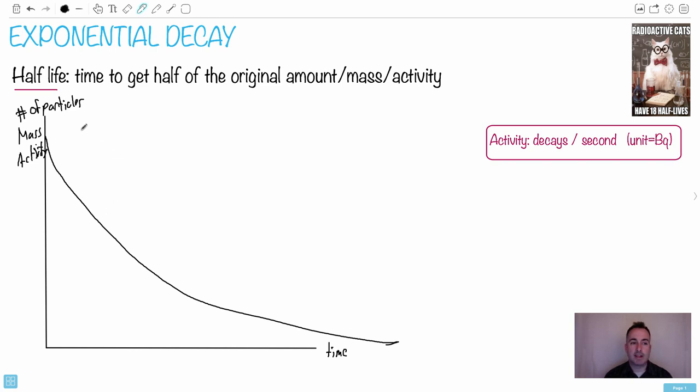So if you look at this, the idea is that you either start off with a certain number of particles or it could be a mass, like in grams or kilograms or whatever. It could be something called activity. Activity is just decays per second. So we use that unit called a becquerel. So it could be activity. Either of these, it goes like this.